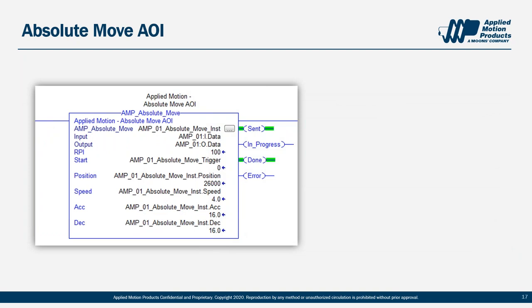The Absolute Move AOI is a bit more complex. To execute an absolute move, you need to set target position, move speed, accel, and decel — those are the bottom four tags in the AOI — entered in the same units you're used to for SCL commands: revs per second and revs per second squared, as outlined in AppNote 46. There are also housekeeping tags on top: you point the AOI to the input and output assemblies, provide the RPI so the AOI knows how long to hold the output assembly's reach command, and provide a start bit to trigger the AOI once all other tags are set.